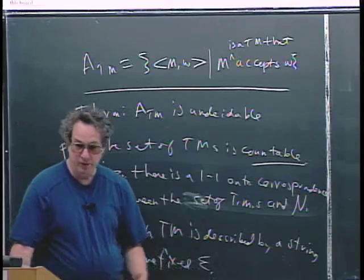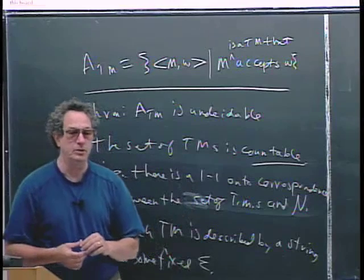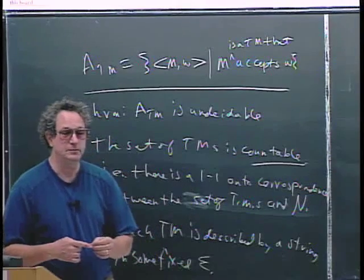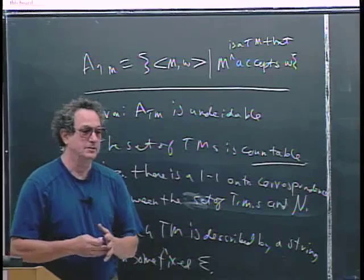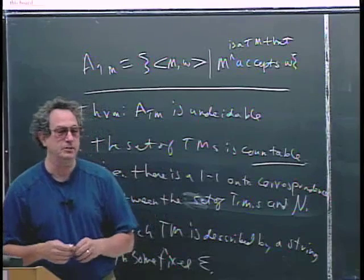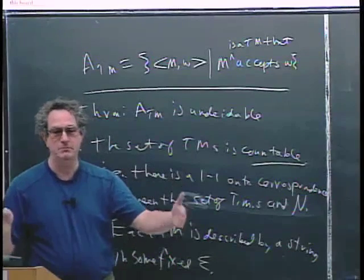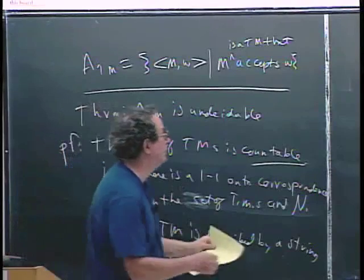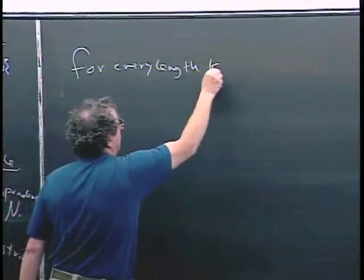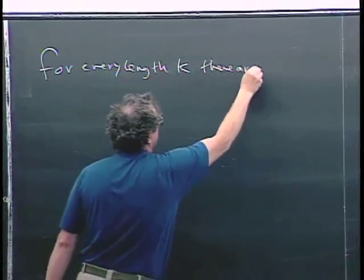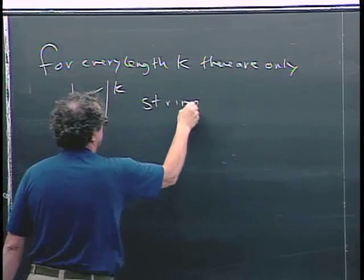If you have a fixed alphabet, let's say it has 256 characters in it, how many strings of length one can there be? 256. And how many strings of length two can there be? 256 squared. And so how many strings of length K can there be? 256 to the K. So for every length, there's a finite number of strings that are possible. For any length K, there are only size of the alphabet raised to the K strings of that length.